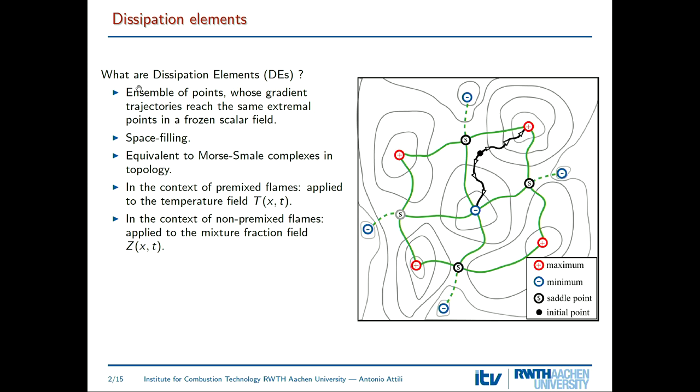What are dissipation elements? If you think about a scalar field — that can be a passive scalar in turbulence, kinetic energy, or whatever — you can define a dissipation element as follows. You take a point, compute the gradient of the scalar, follow the gradient in two directions until you reach the maximum and the minimum along the gradient trajectory, then collect all points connected to the same extremal points. That region is called a dissipation element.